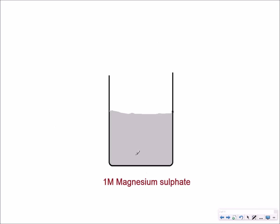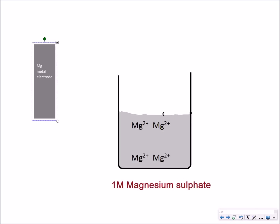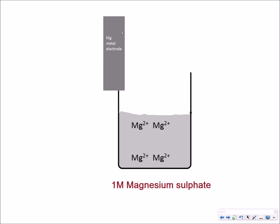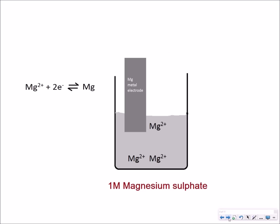Now to start off, here I've got a magnesium sulfate solution and obviously in this solution we're going to have magnesium ions present. Now what would happen if I picked up this magnesium electrode and dipped it into the solution containing Mg2+ ions? Well, an equilibrium is set up between the magnesium ions in solution and the magnesium metal.